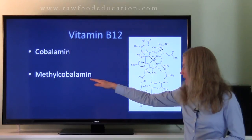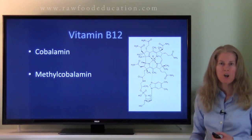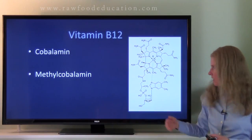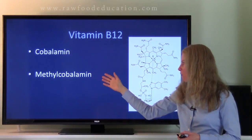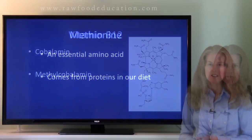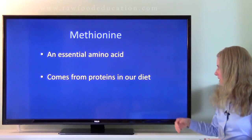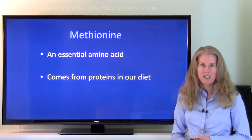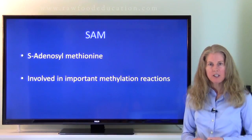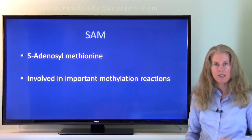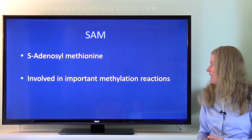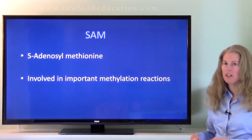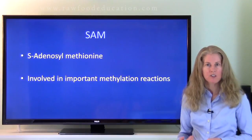One of the human bioactive forms of vitamin B12 is a type of cobalamin called methylcobalamin. Methionine is one of the essential amino acids and it comes from proteins in our diet. Our next molecule is SAM, also known as SAMe or S-adenosylmethionine. SAM is involved in a variety of reactions throughout the body, specifically methylation reactions, and we'll see what that is in just a couple of minutes.